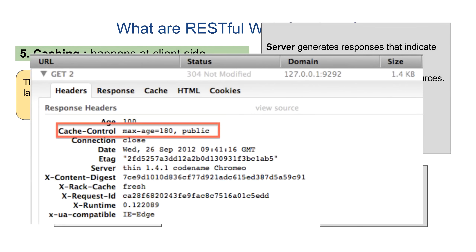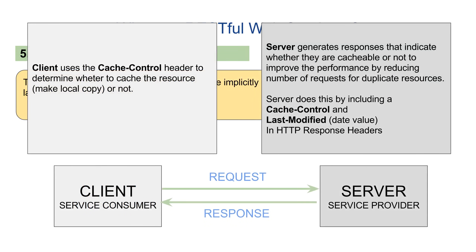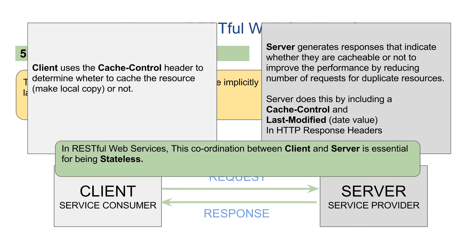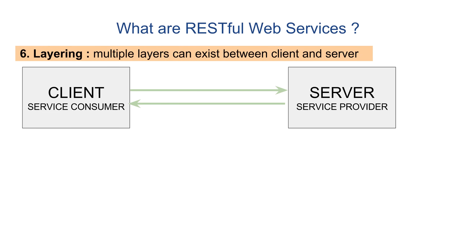Let us see an example of a response from the server. If we look at the headers, we can see there is a cache-control header which tells the maximum time that this response should be cached. You can also see an ETag here — ETag stands for entity tag. Every unique version of the resource has a unique entity tag, so if the resource changes, a new entity tag is given to that representation. The client uses the cache-control header to determine whether the response has to be cached, which helps coordinate between client and server and allows the server to remain stateless.